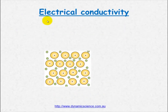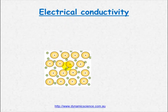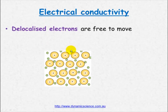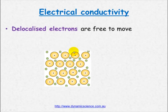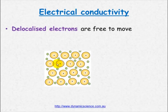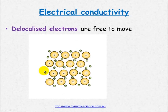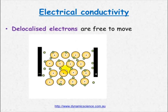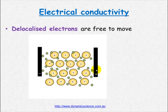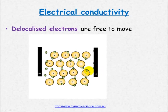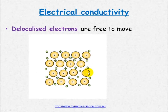Metals conduct electricity, and the reason for that is because of the sea of delocalized electrons. For something to conduct electricity, there must be some form of free moving charge. In this case, the electrons are able to move. When we apply a charge, the electrons will move from the negative terminal and go in the direction of the positive terminal — they're attracted to the positive side. With this free moving charge, metals are able to conduct electricity.